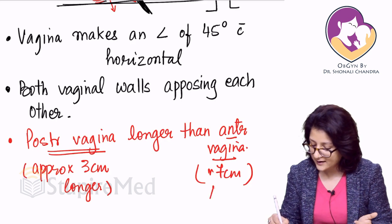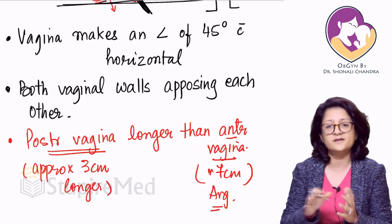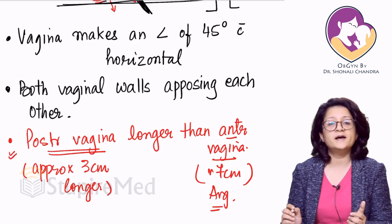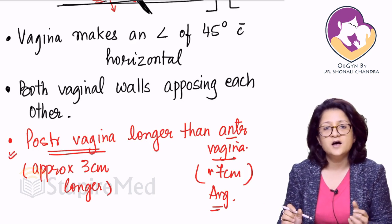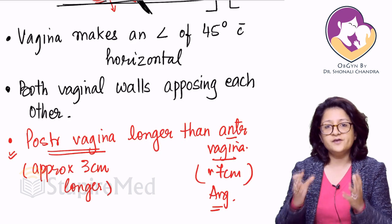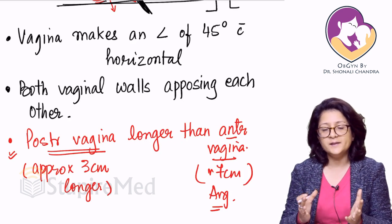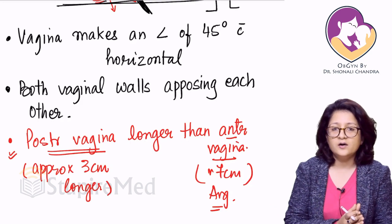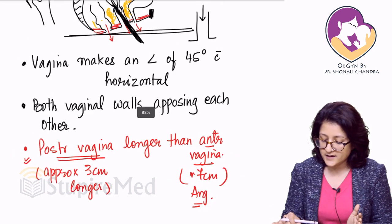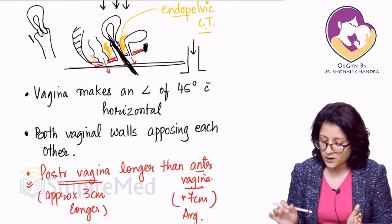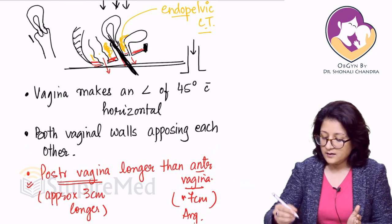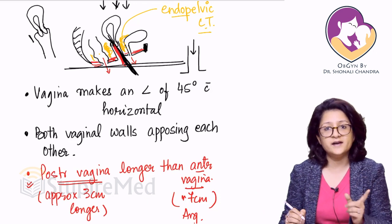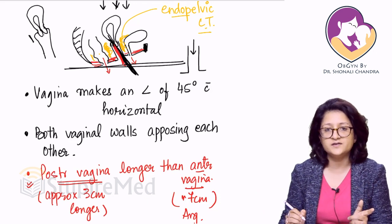This is just an average value — it can range between 7 to 9 centimeters for the anterior, and accordingly the posterior vagina is about 3 centimeters longer. So the first mechanism is the anatomical adjustment the body has made. Now let us focus on how this vaginal angle is maintained — that is very important.